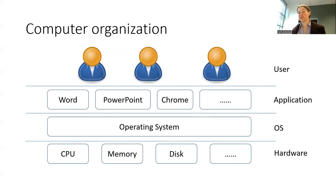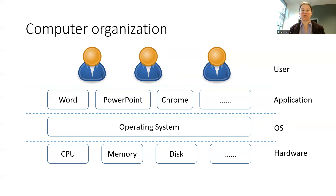If we assume we have a definition for an operating system, we can talk about where it sits inside a computer's organization. We have the user who interfaces typically with the applications they are currently running — Word, PowerPoint, maybe watching a YouTube video while writing a term paper. Those application programs are typically controlled by the operating system, which sits underneath them in terms of computer organization.